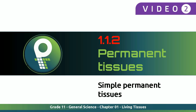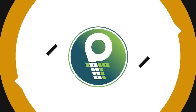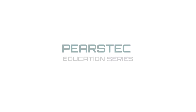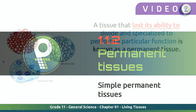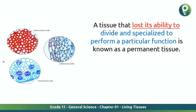Under this permanent tissue, let's learn something about simple permanent tissues. A tissue that lost its ability to divide and specialize to perform a particular function is known as permanent tissues. In our previous session, we were talking about the tissue that got the ability to divide and specialize. This tissue doesn't have that — it's the right opposite. So this is known as permanent tissues.